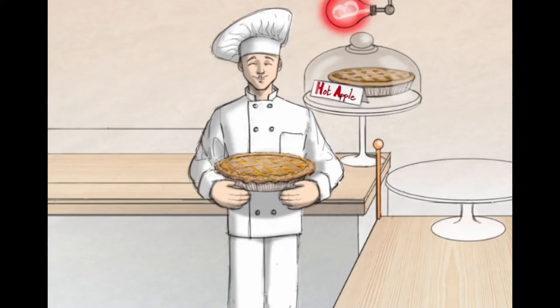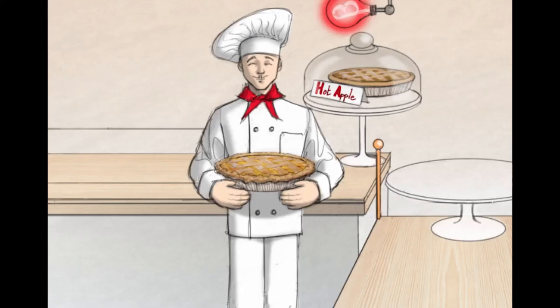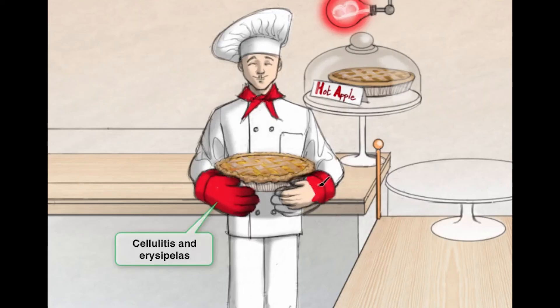The second pyogenic infection is pharyngitis, more commonly known as strep throat. We'll represent this by drawing on a red handkerchief — think of a really red, erythematous, and inflamed throat. The third condition is really two conditions: cellulitis and erysipelas, but they're very similar. Erysipelas is basically a very superficial cellulitis infection with well-demarcated borders. Strep pyogenes is the most common cause of erysipelas, represented by drawing big red mittens on the baker, indicating erythema of the skin. So we've just covered three pyogenic infections.